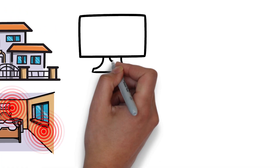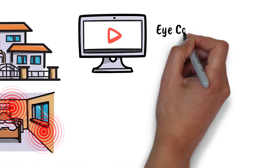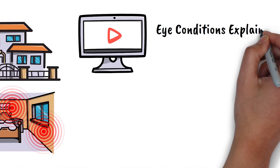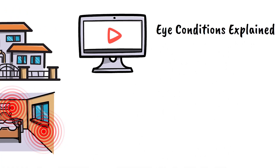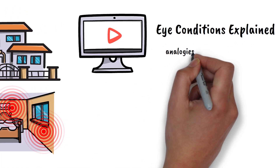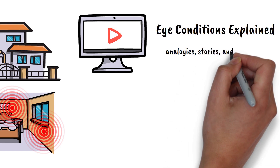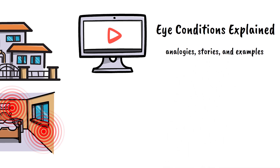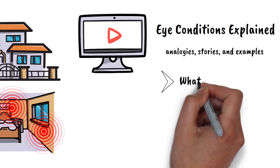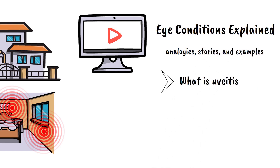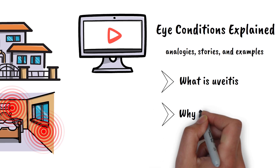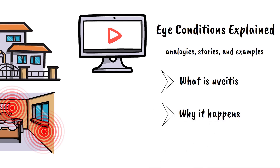Welcome to Eye Conditions Explained, where we break down complex eye health topics using simple analogies, stories, and examples so that you can easily understand them. In this video, we're going to explore what uveitis is, why it happens, and what puts you at risk for developing this sight-threatening condition.